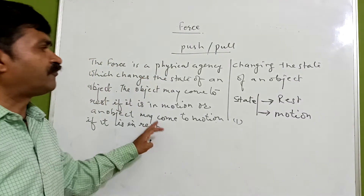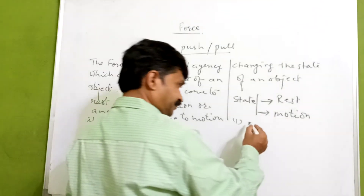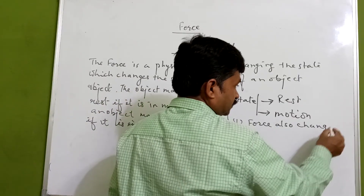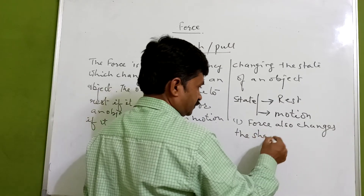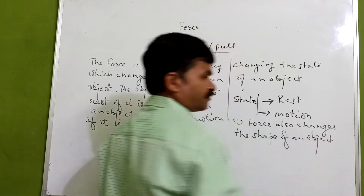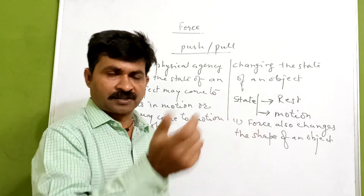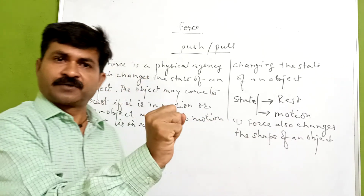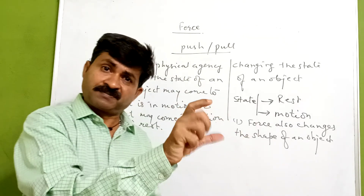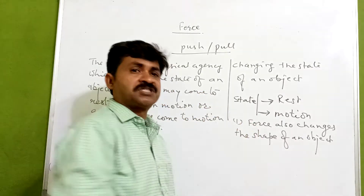It is clear that a force changes the state of an object. The second thing is that force also changes the shape of an object. A simple example: if you are squeezing a tennis ball which you use for playing cricket, putting some force on it — what happens is it changes its shape, which is a slight one. So force also changes the shape of an object.